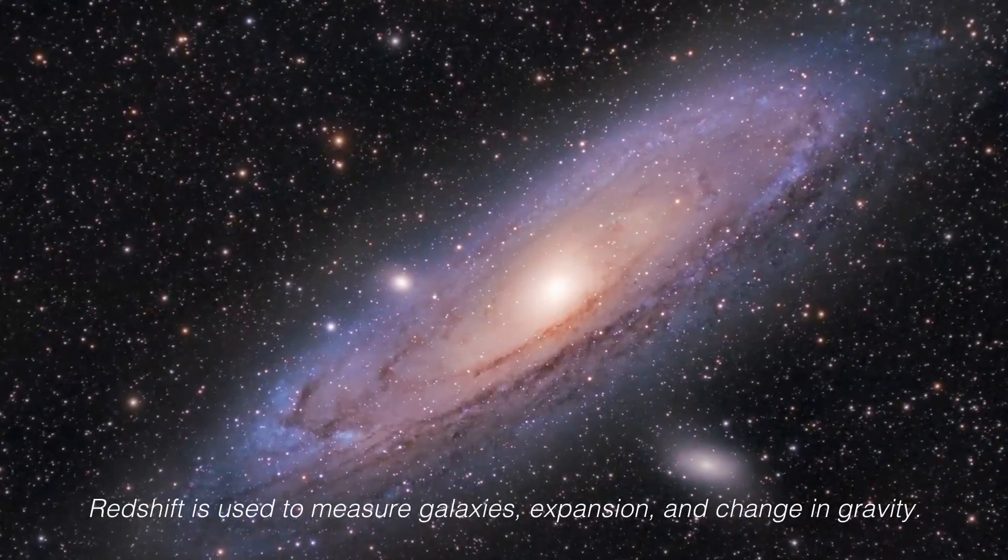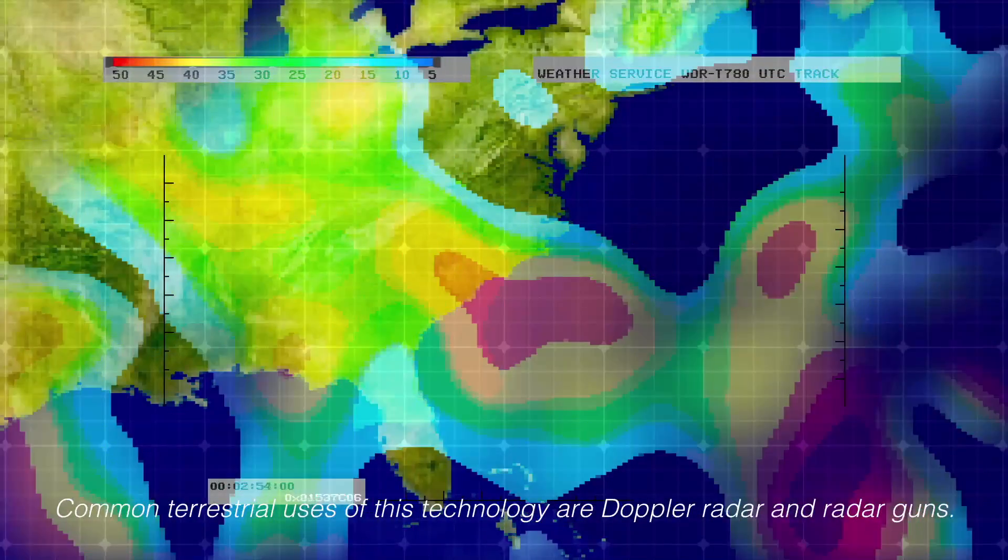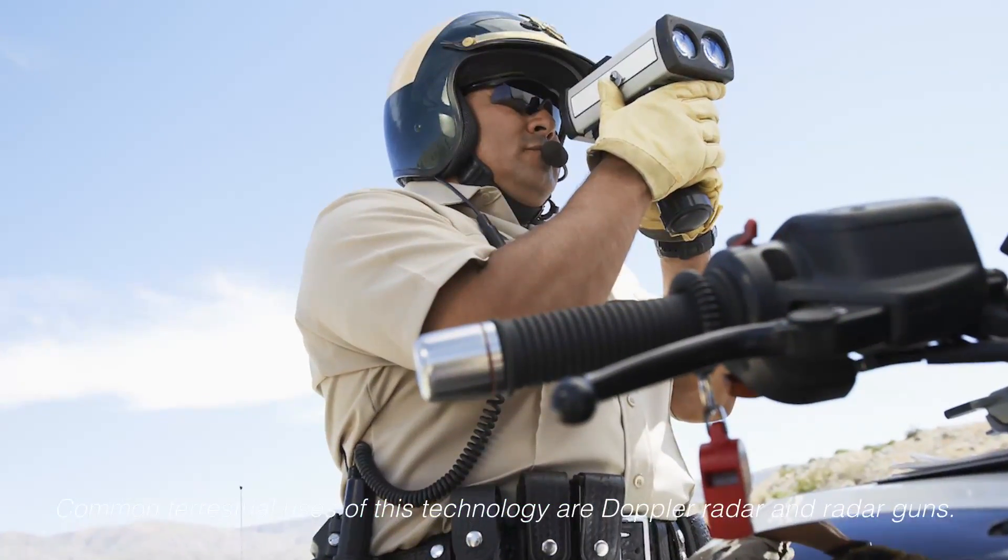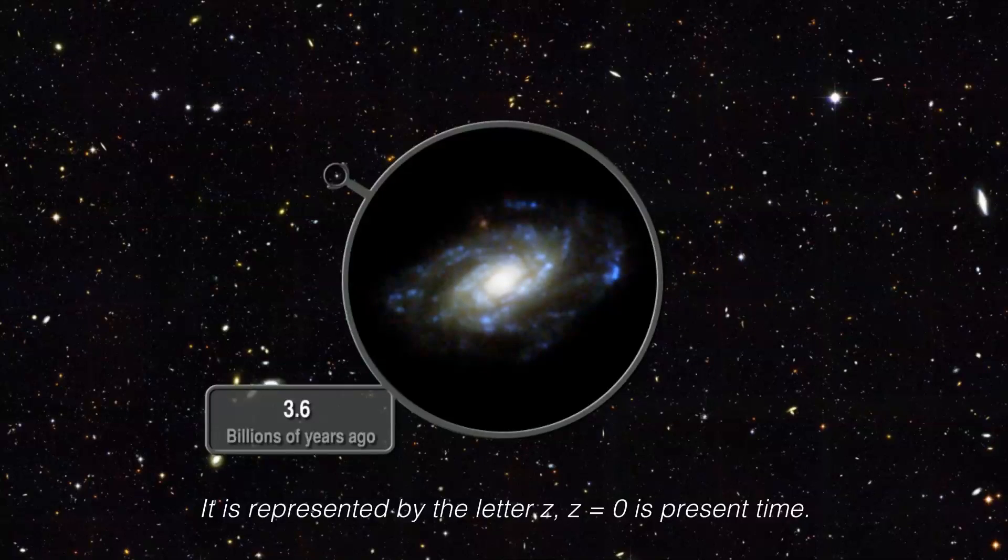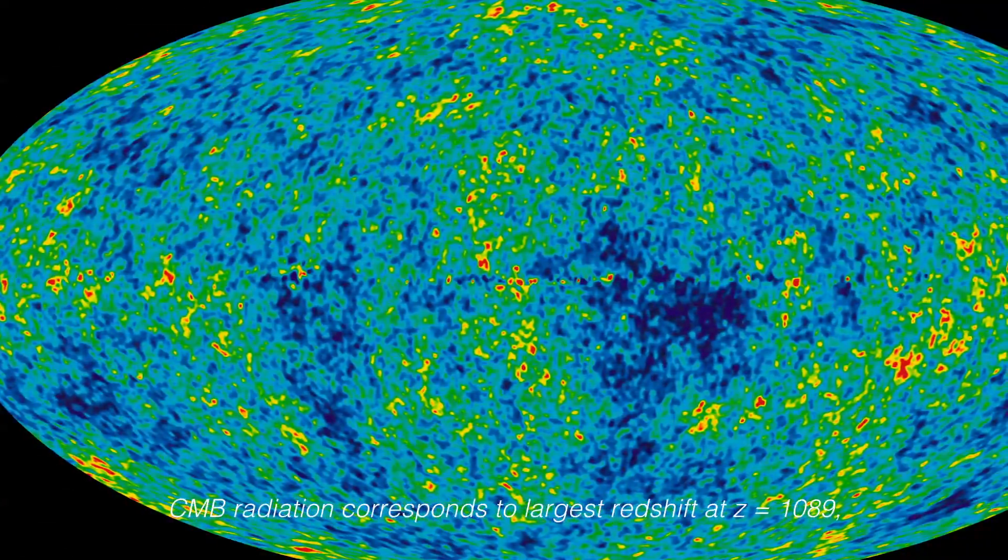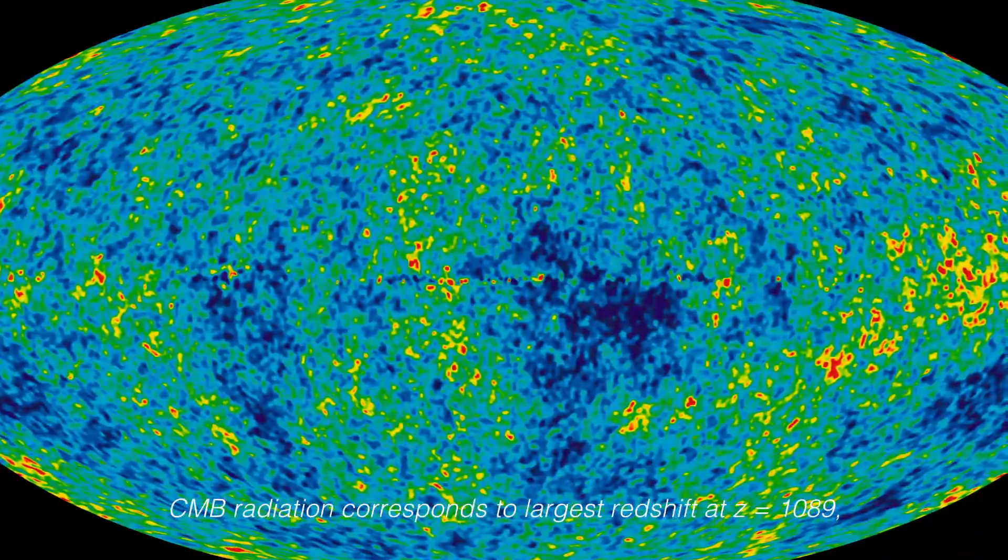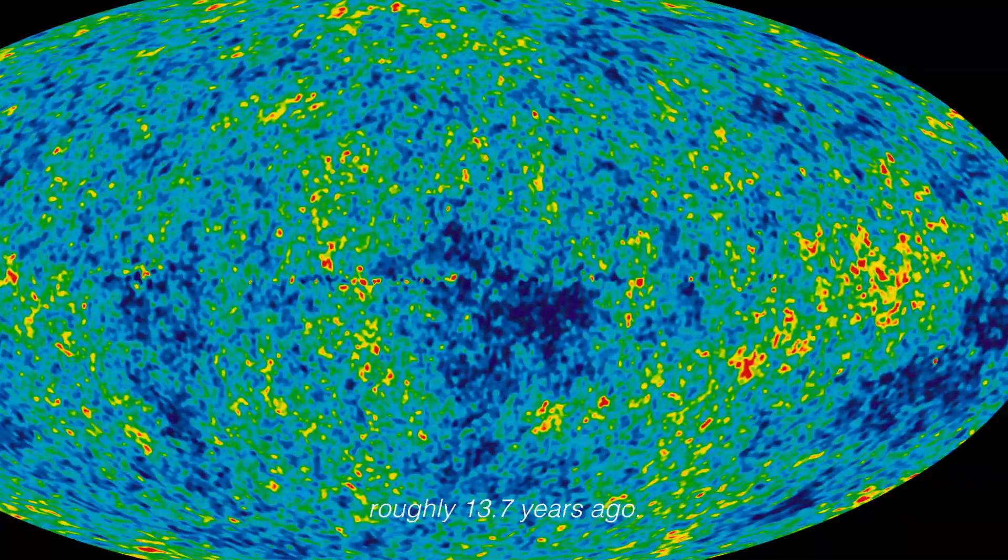Redshift is used to measure galaxies, expansion and change in gravity. Common terrestrial uses of this technology are Doppler radar and radar guns. It is represented by the letter Z. Z equals 0 is present time. The more distant the object, the larger the redshift. CMB radiation corresponds to largest redshift at Z equals 1089, roughly 13.7 billion years ago.